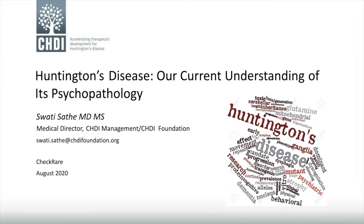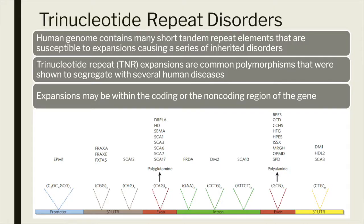We will start with a little bit of background of Huntington disease and the trinucleotide repeat disorders. Huntington disease can be considered as a prototypic trinucleotide repeat disorder. The human genome contains short tandem repeats of nucleotides and these are distributed throughout the genome. However, these tandem repeats are susceptible to expansion over generations due to several mechanisms involved. But in the physiologic state, or in individuals with a normal number of these repeats, these repeats are usually short and they are inherited in a similar manner.